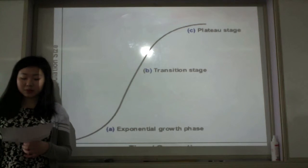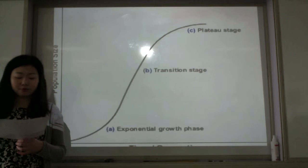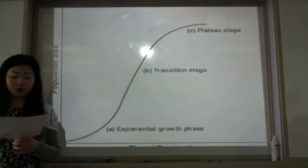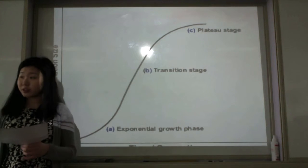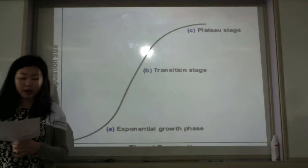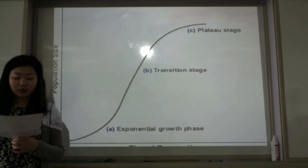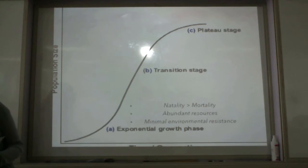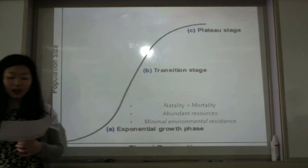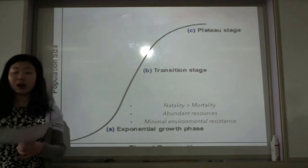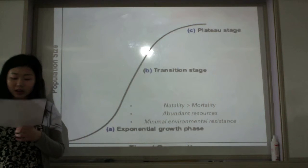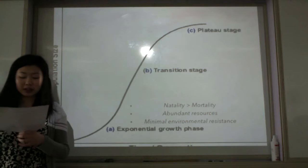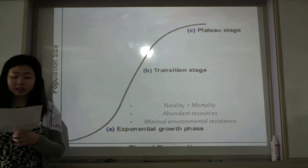Growth in the beginning may be slow as there might not be enough reproducing individuals. However, as the number of individuals increases and reproduction gets underway, growth enters the exponential phase. In this phase, there is rapid growth as the natality rate is higher than the mortality rate.